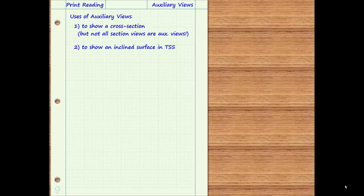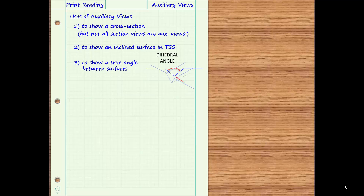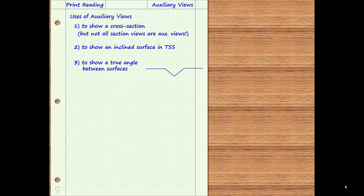Auxiliary views may also be used to show the angle between two surfaces in true size and shape. Consider a V-shaped groove cut into a surface. The two surfaces that form the sides of the groove intersect at some included angle, called their dihedral angle. This angle will only appear in true size and shape if viewed from a perspective looking straight down the axis of the groove, from which point the bottom of the groove appears as a single point. If an auxiliary viewing plane is oriented so that the bottom edge of the V-groove appears as a single point, then the dihedral angle can be drawn in true size and shape in the resulting auxiliary view.